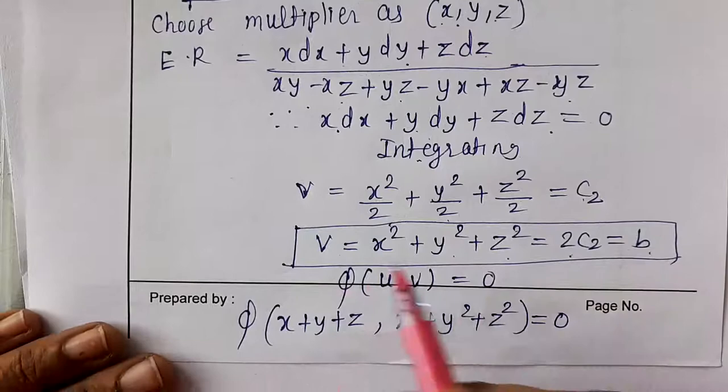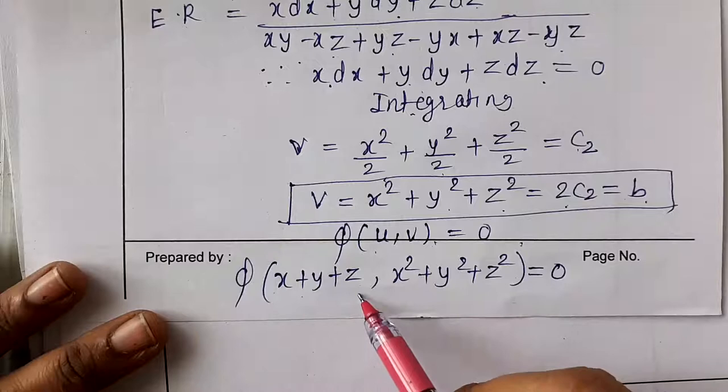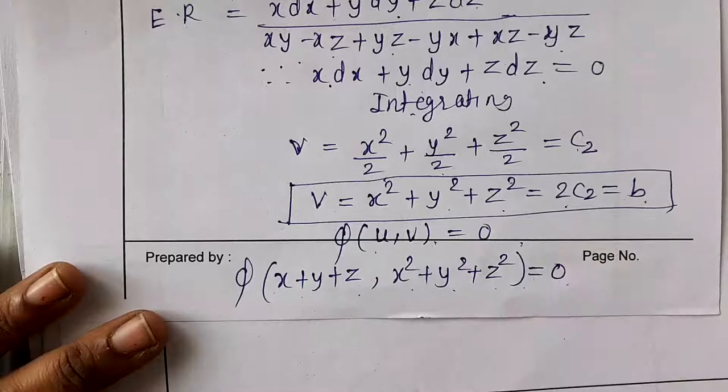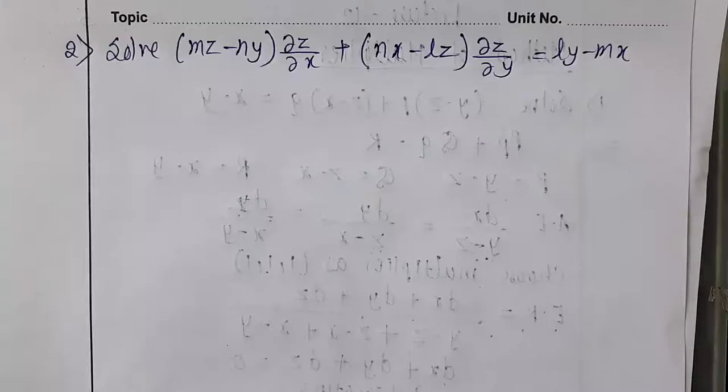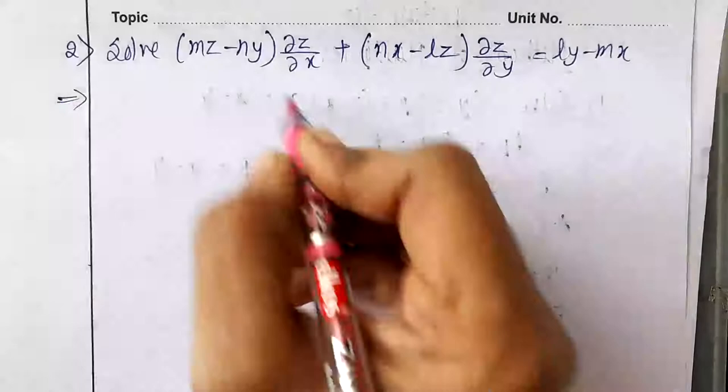The complete solution is φ(u, v) = 0, that is φ(x + y + z, x² + y² + z²) = 0. This is the solution to the first example.